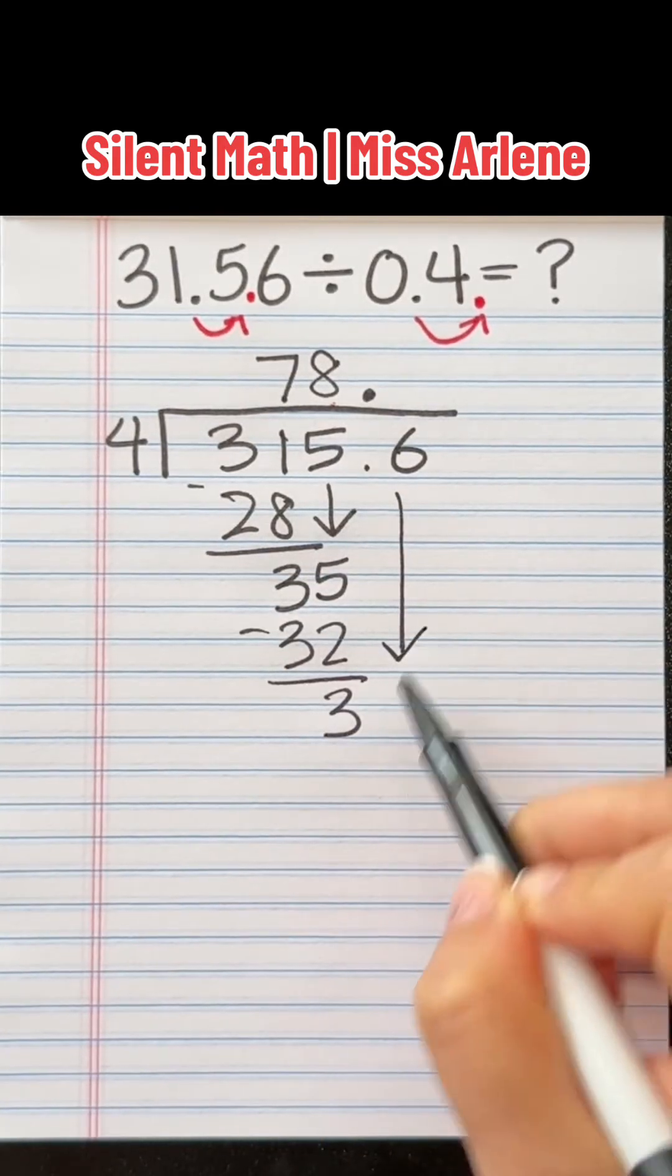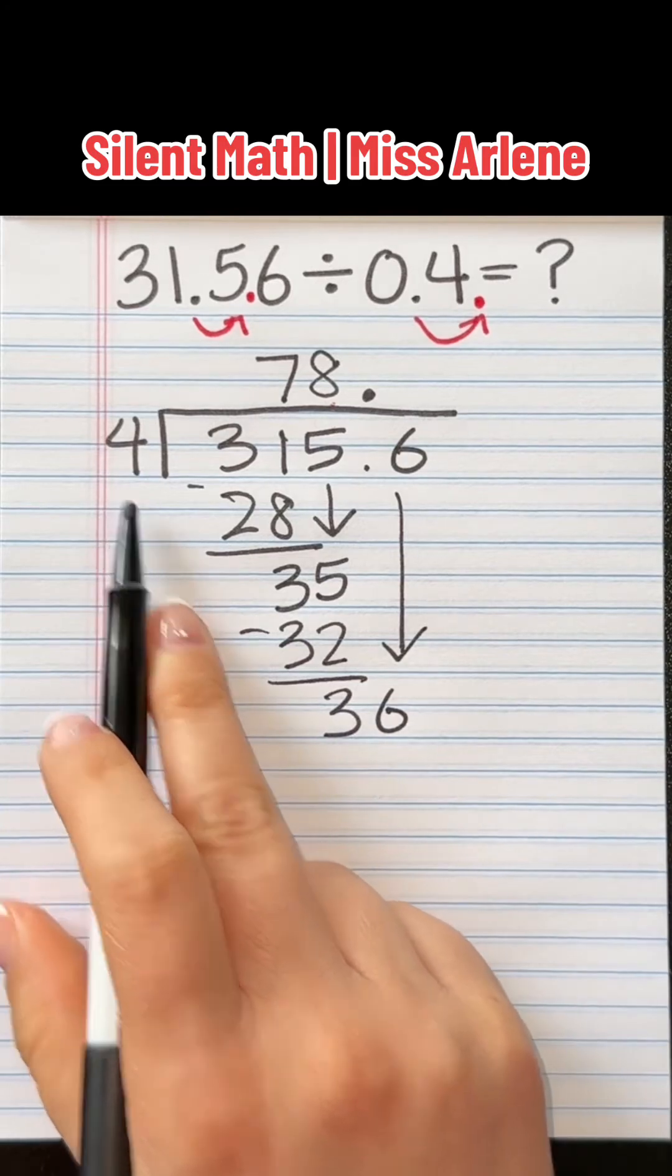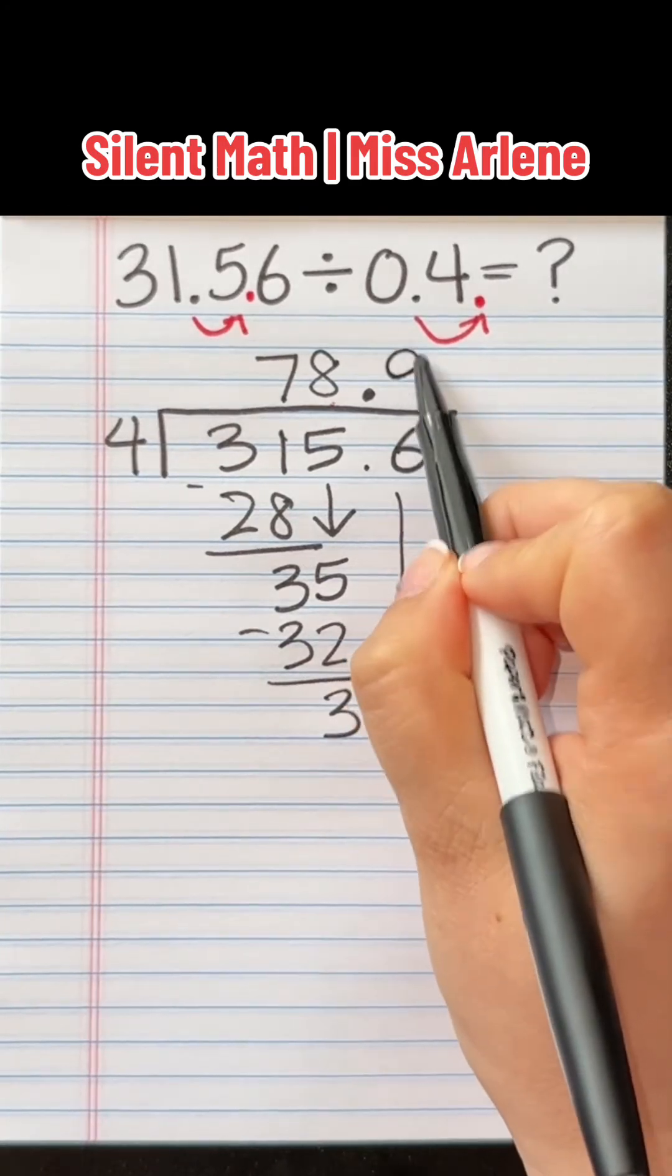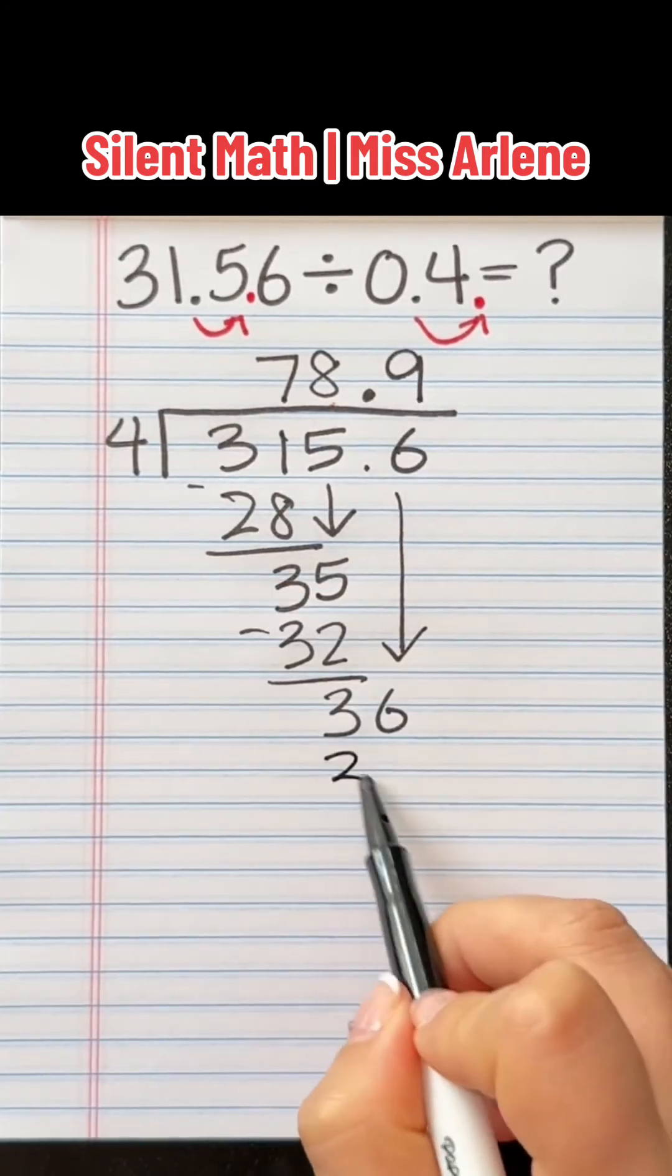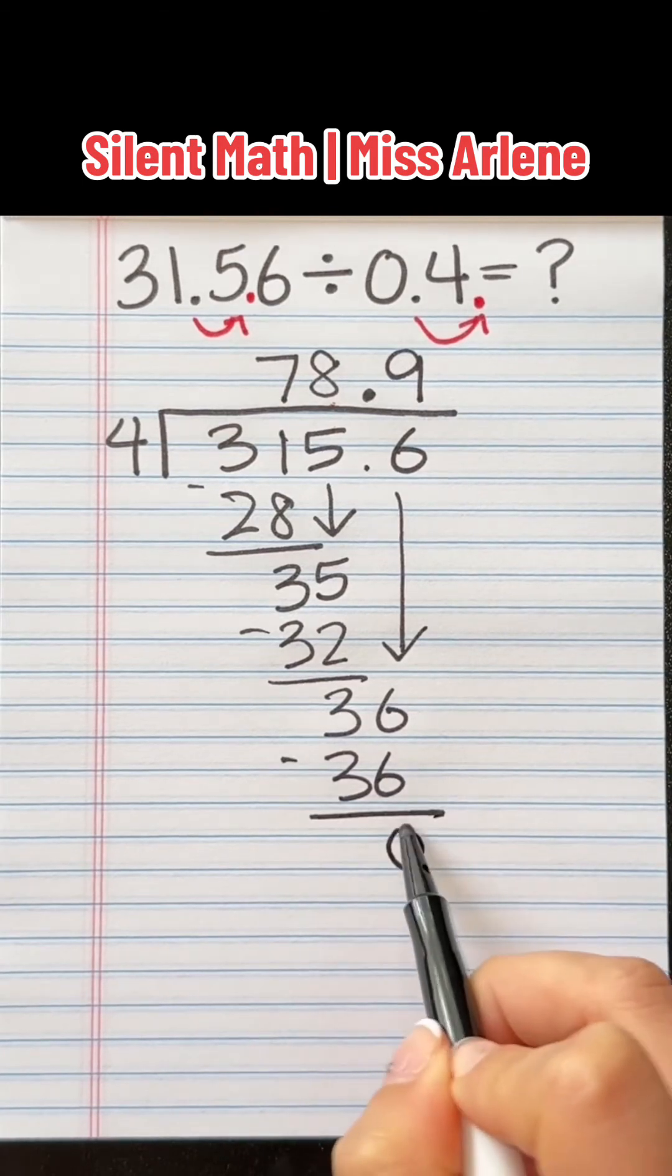Subtract. Bring down that last digit. How many groups of 4 can go into 36? Exactly 9 times. We love that. That's going to be 36. There's a remainder of 0.